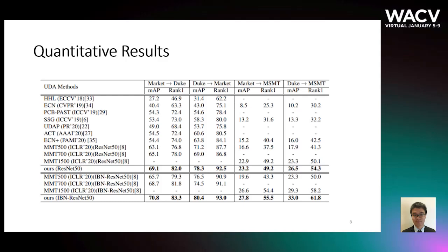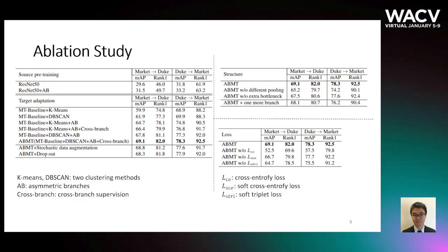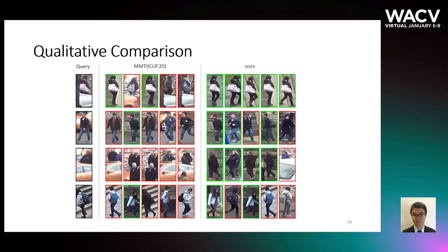We compared our method on four commonly used unsupervised domain adaptation re-ID evaluation protocols. We also tested two different backbone networks: ResNet-50 and IBN-ResNet-50. Our method outperforms previous methods in all these protocols. In our ablation study, we compared two different clustering methods and validated the effectiveness of our proposed asymmetric branches and cross-branch supervision. In the first table we compared asymmetric branch structures, and in the second table we validated the effectiveness of each loss function.